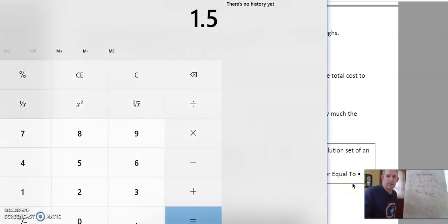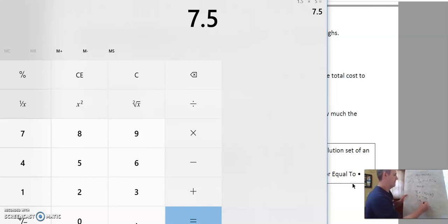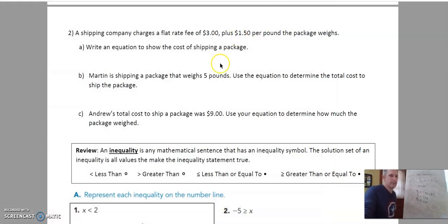All right so pull up the calculator. We got a dollar fifty times five and we get seven fifty plus three would give us ten fifty. All right so for this part of the problem it would cost him ten dollars and fifty cents for shipping. Okay so there's an answer to B.